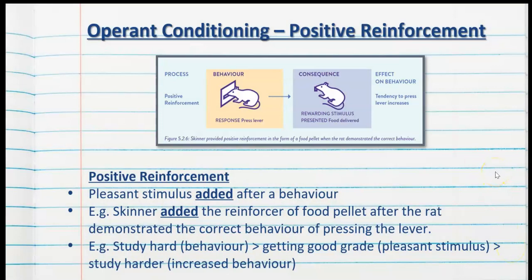Positive reinforcement is when a pleasant stimulus is added after a desired behavior has been performed. For example, Skinner added the reinforcer of a food pellet after the rat demonstrated the correct behavior of pressing the lever. He also added the reinforcer of food after the pigeons demonstrated the correct behavior of turning or pecking whenever they saw the relevant word. Another example is when a student studies hard and is then rewarded by getting a good grade — a pleasant stimulus added after the desired behavior — which motivates them to continue good study practices. So the behavior increases.